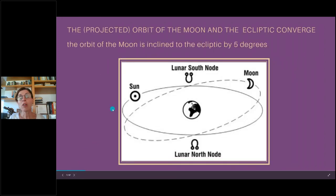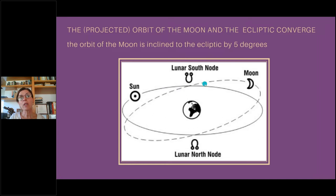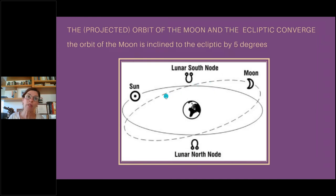From an astronomical point of view, if we project the orbit of the moon into space, we get the projected orbit of the moon, which is tilted towards the ecliptic, so they cross — there's an intersection in their paths. When the moon is going from northern celestial latitude to southern celestial latitude, south of the path of the sun, that is the point of the south lunar node.